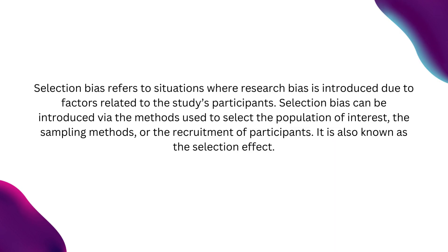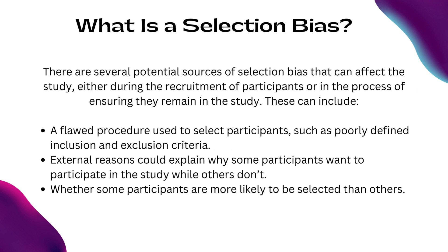Selection bias occurs when the selection of subjects into a study, or their likelihood of remaining in the study, leads to a result that is systematically different to the target population. Selection bias often occurs in observational studies where the selection of participants isn't random, such as cohort studies, case control studies, and cross-sectional studies. It also occurs in interventional studies or clinical trials due to poor randomization.